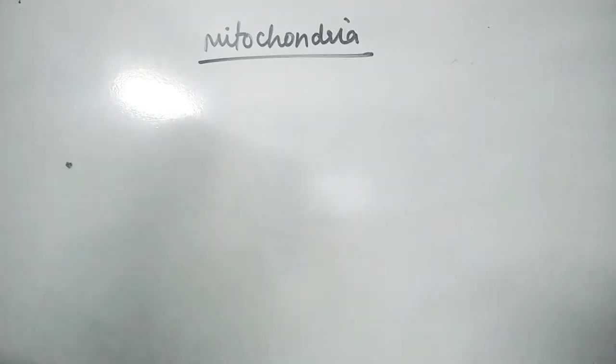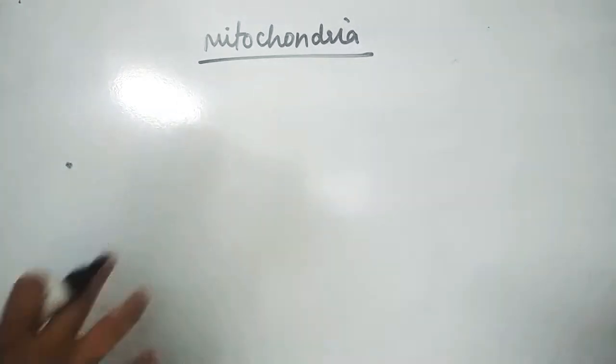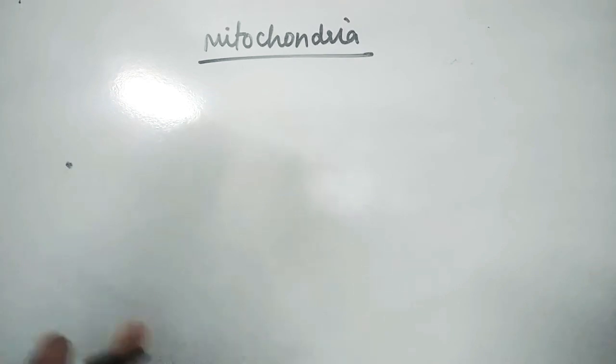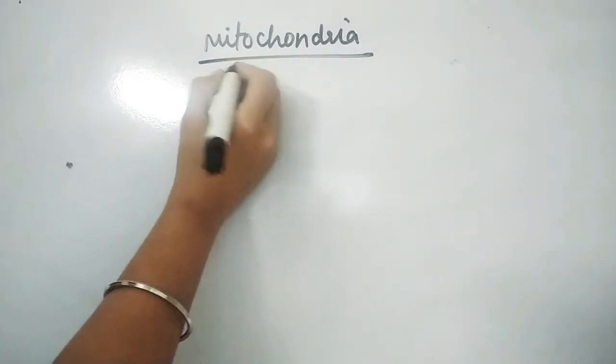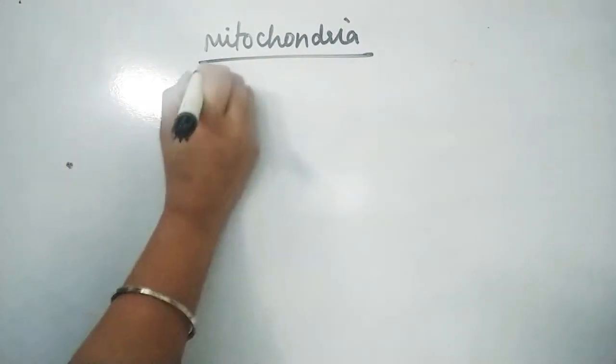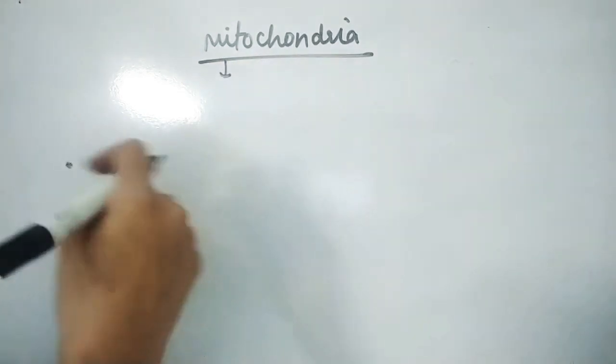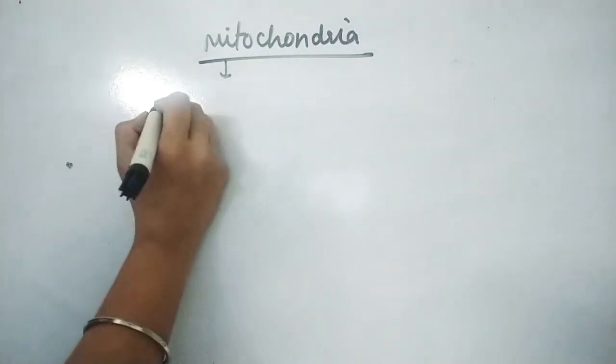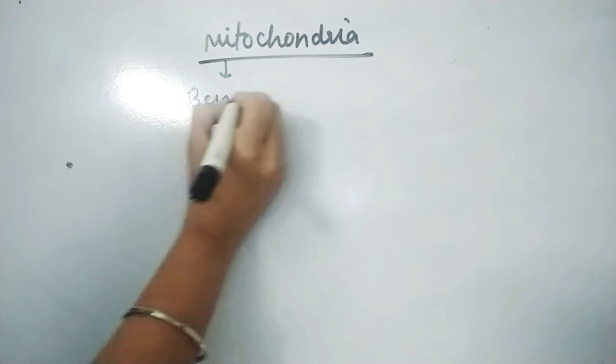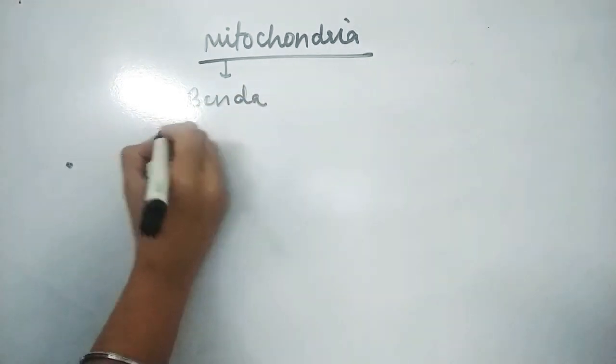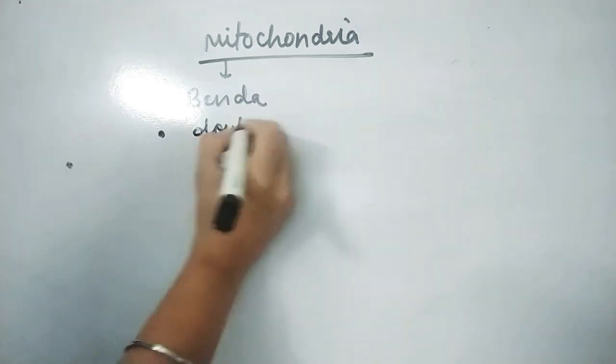Hello students, today we will discuss your next cell organelle, that is double membrane cell organelle mitochondria. Mito means thread and chondria means granule-like structure. The name was given by Benda. It is a double membrane organelle.